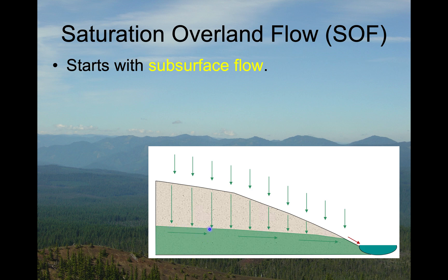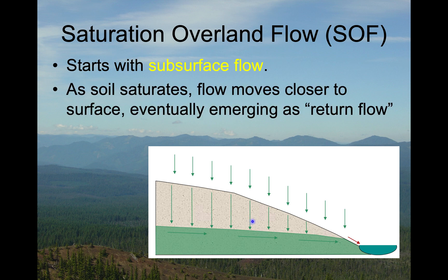In any case, we have a water table developing during the storm. As more rain falls and infiltrates and percolates downward, that water table is raised up so that eventually it starts to intersect the surface. And instead of getting subsurface flow going directly into the stream, it emerges onto the saturated ground and then proceeds over land. This red arrow in the diagram is really our saturation overland flow, and since this is water that has infiltrated, percolated, moved through the subsurface, and is now returning to the surface, we call this return flow.